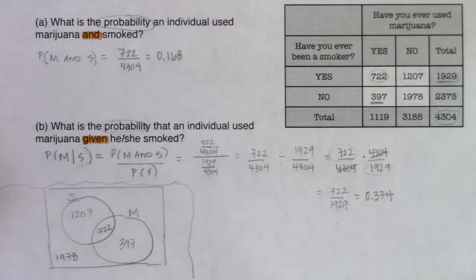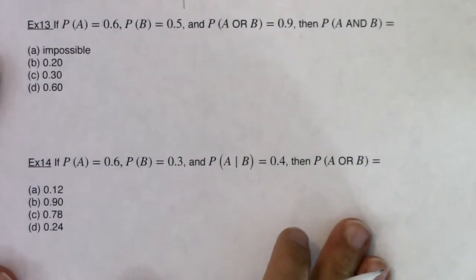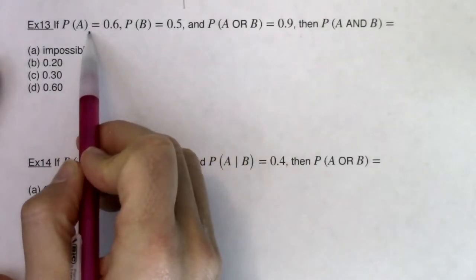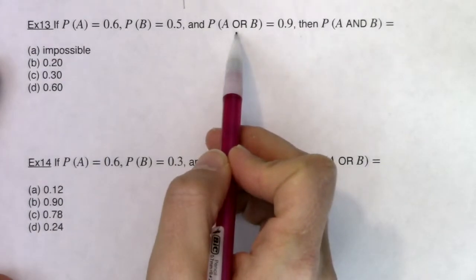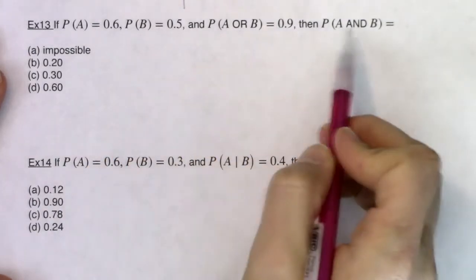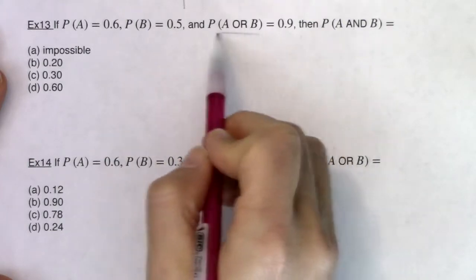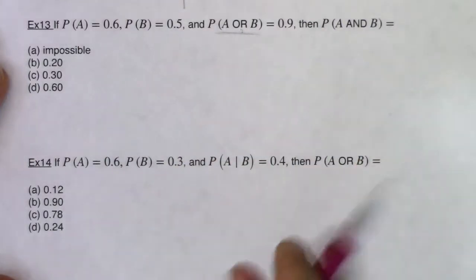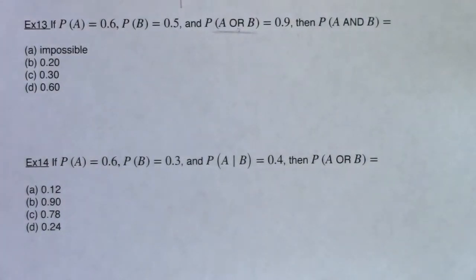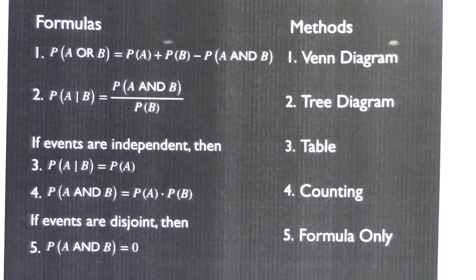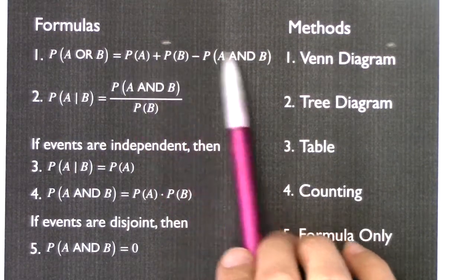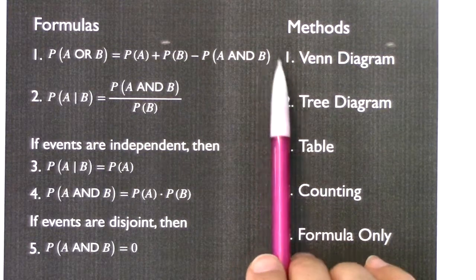Now let's go to Examples 13 and 14 — formula only, no word problems, no tables, no graphs. Example 13 gives us: P(A) = 60%, P(B) = 50%, P(A or B) = 90%. What is P(A and B)? The OR stands out, so I'll go to formula one on the formula sheet: P(A or B) = P(A) + P(B) − P(A and B).